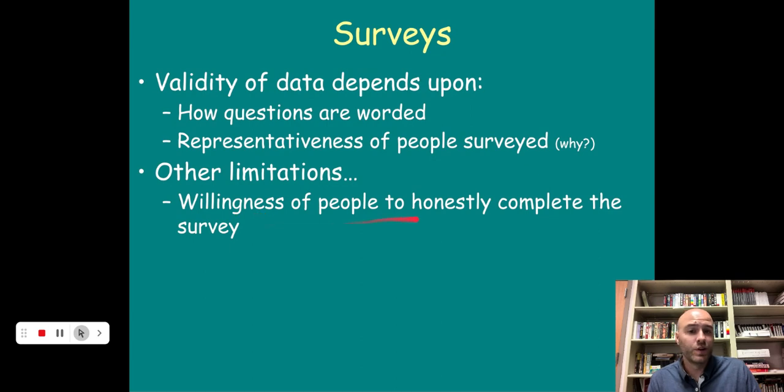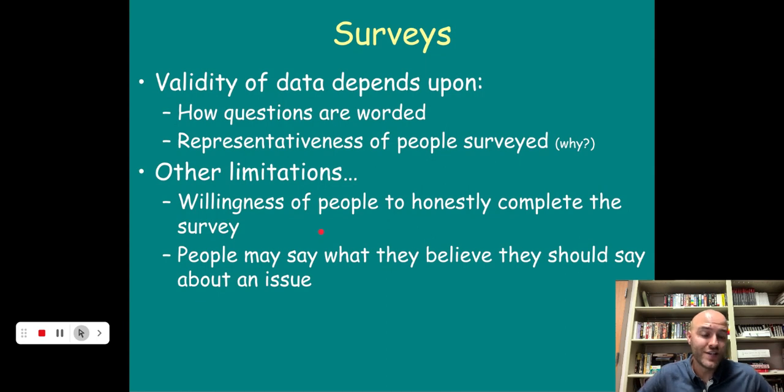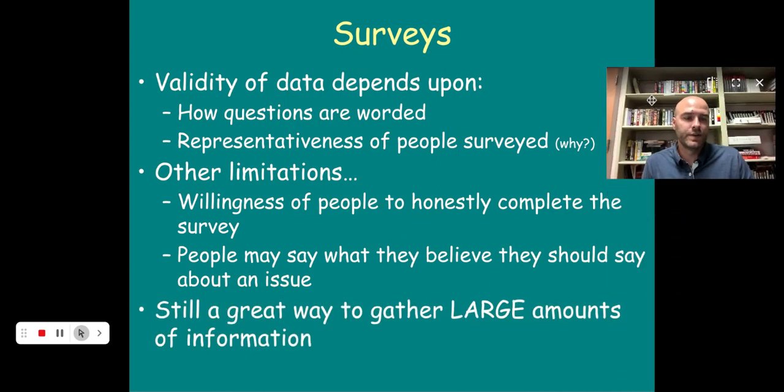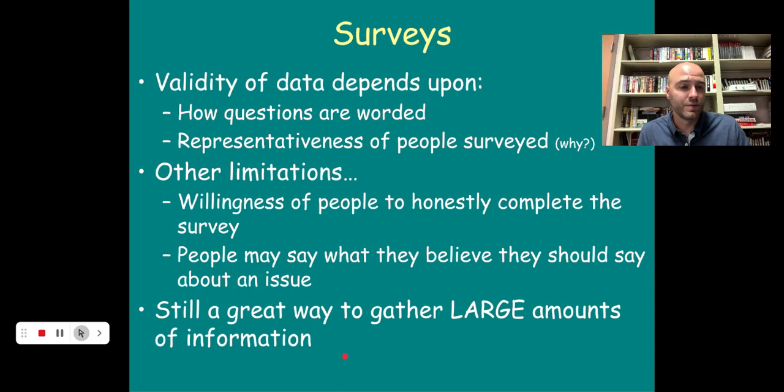A few other limitations, the willingness of people to honestly complete the survey. We're going to see how honestly you guys completed that fear survey that we took at the beginning of class last week. And people may say what they believe they should say about an issue. When you know there's hot-button topics and somebody else is going to read your response, you might not actually respond the way that you truly believe. And you might say something that you think they want to hear. So you need anonymous surveys. You need representativeness. You've got to be careful how your questions are worded so that people feel like they can truly be honest in their responses. Still, a survey is a great way to gather large amounts of information, probably the best way we have.